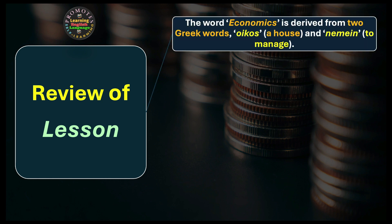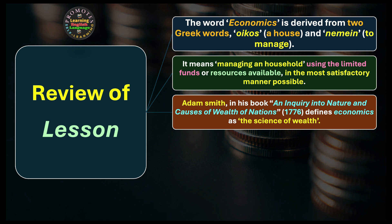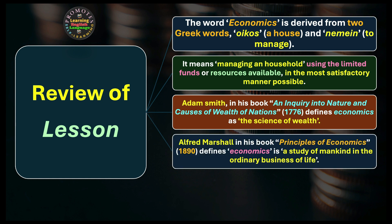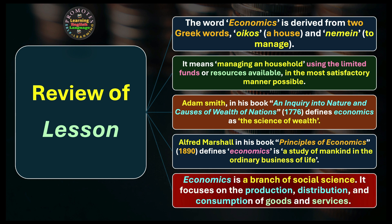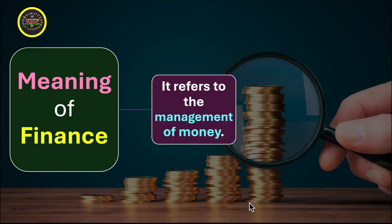To review: the word economics is derived from two Greek words — 'oikos' meaning a house and 'nemen' meaning to manage — essentially managing a household using limited resources in the most satisfactory manner. Adam Smith in 1776 defines economics as the science of wealth. Alfred Marshall in 1890 defines it as a study of mankind in the ordinary business of life. Economics is a branch of social science focusing on production, distribution, and consumption of goods and services.